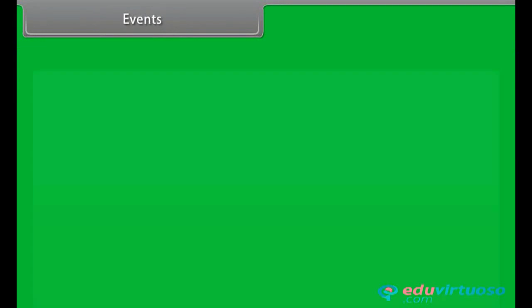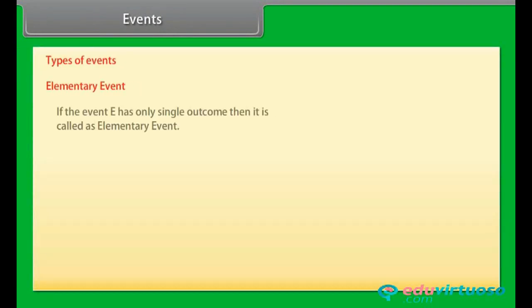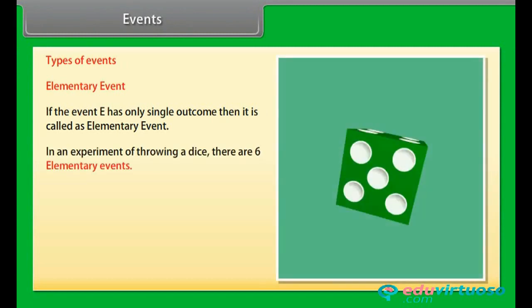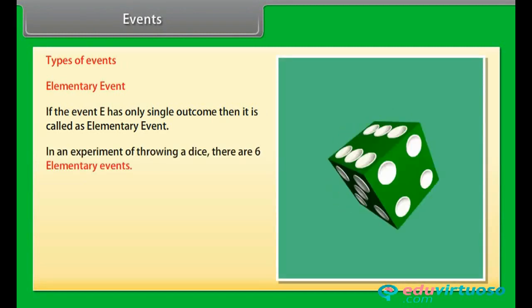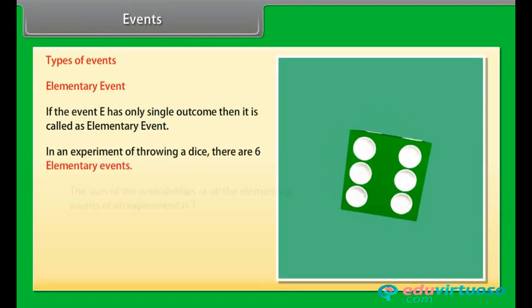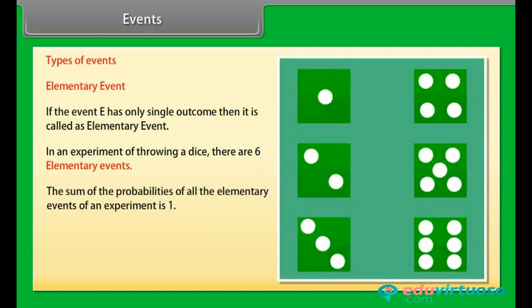Types of Events. Elementary event: If the event E has only a single outcome, then it is called an elementary event. In an experiment of throwing a dice, there are 6 elementary events. The sum of the probabilities of all the elementary events of an experiment is 1.